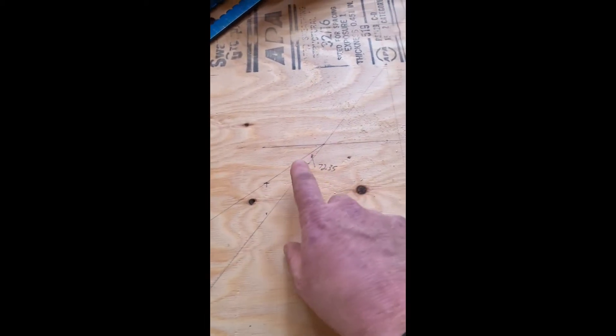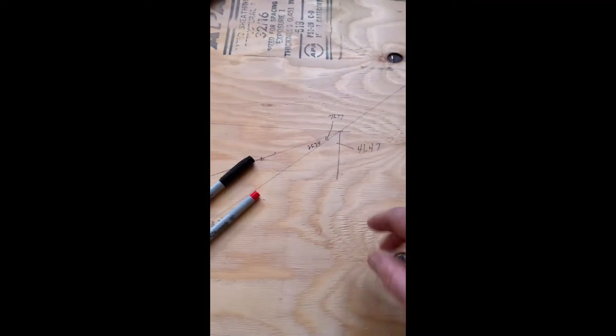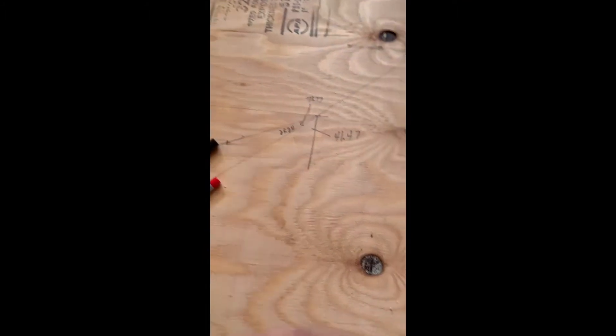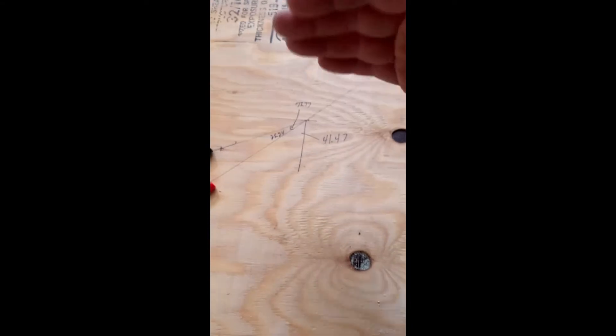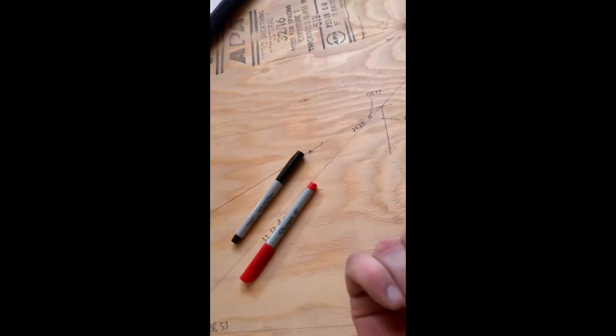But this one is longer, and that one's shorter because this is a common and that's a hip. So the thing to wrap your head around is that they all happen at the same height. The height can't change. The run changes for a hip.